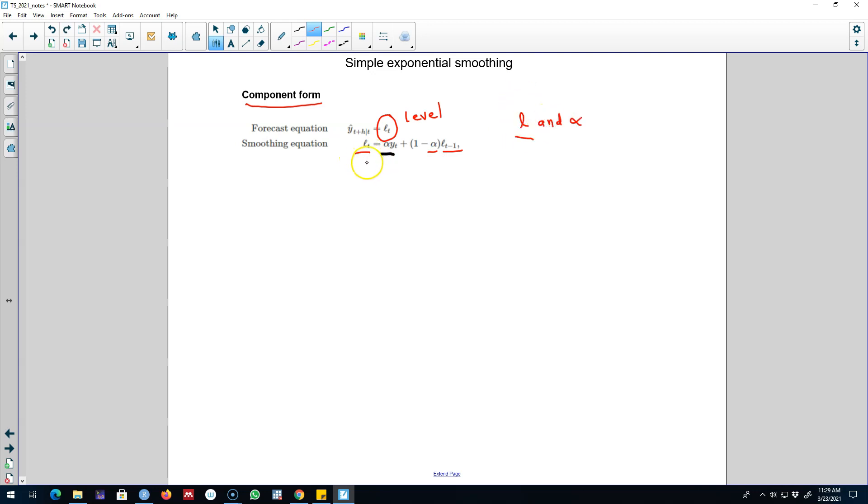We can estimate these values manually or we can minimize sum of squared residuals to estimate the initial level of l0 and to get the value of our smoothing parameter.